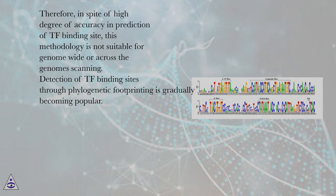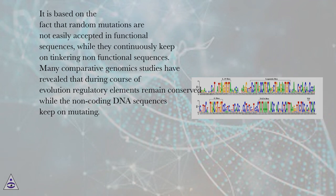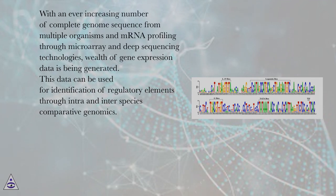Detection of TF binding sites through phylogenetic footprinting is gradually becoming popular. It is based on the fact that random mutations are not easily accepted in functional sequences, while they continuously keep on tinkering with non-functional sequences. Many comparative genomics studies have revealed that during the course of evolution, regulatory elements remain conserved while the non-coding DNA sequences keep on mutating. With an ever-increasing number of complete genome sequences from multiple organisms and mRNA profiling through microarray and deep sequencing technologies, a wealth of gene expression data is being generated, which can be used for identification of regulatory elements through intra- and interspecies comparative genomics.